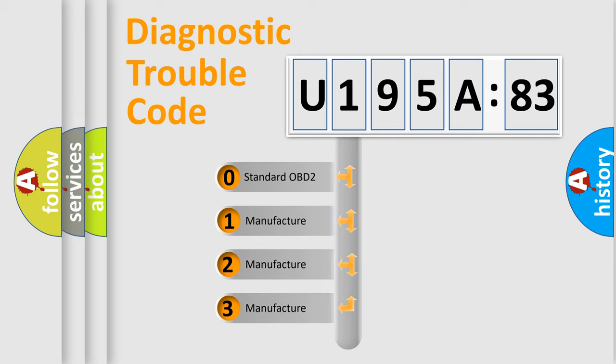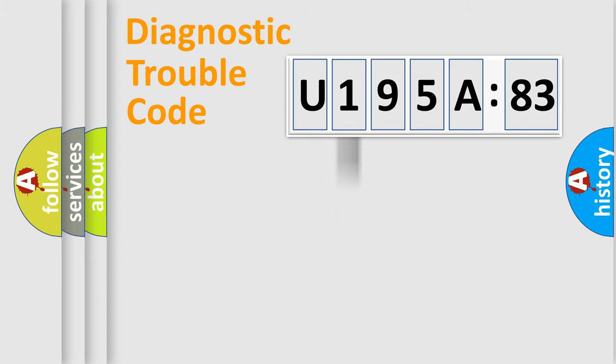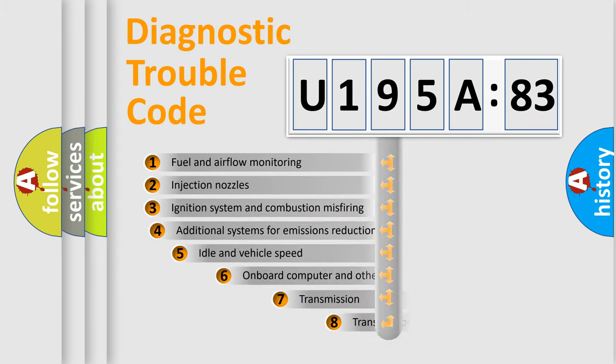If the second character is expressed as zero, it is a standardized error. In the case of numbers 1, 2, 3, it is a more precise expression of the car-specific error.